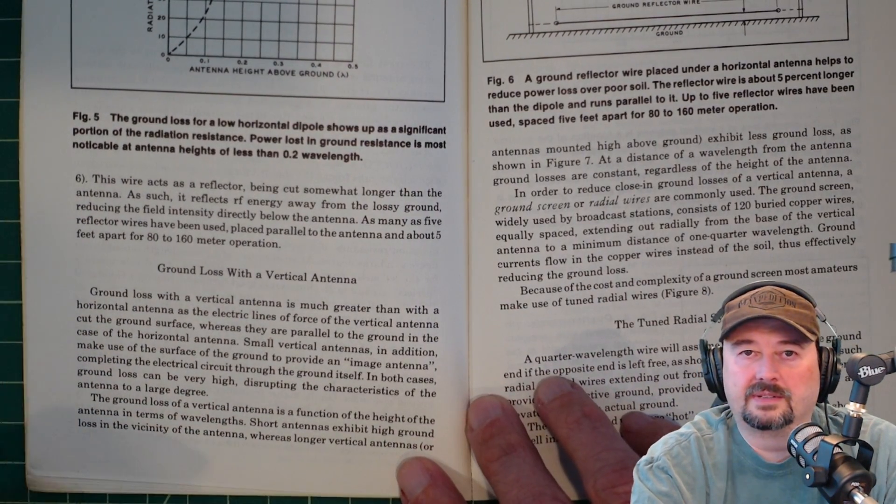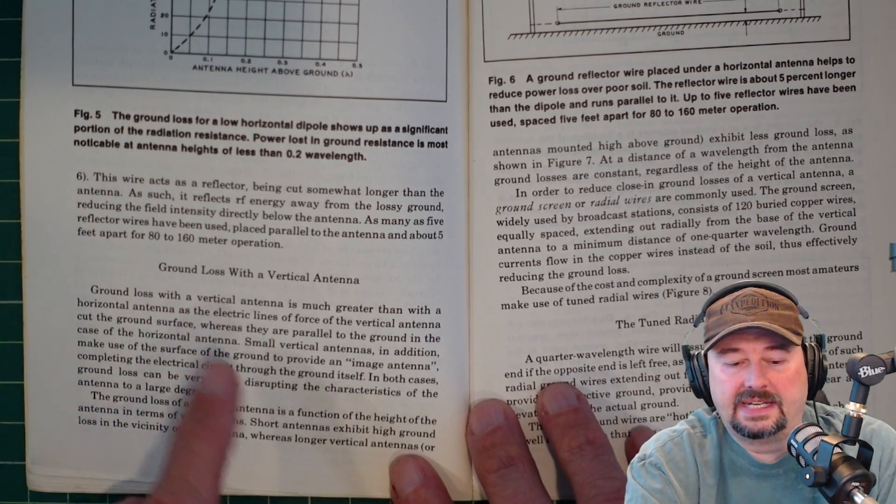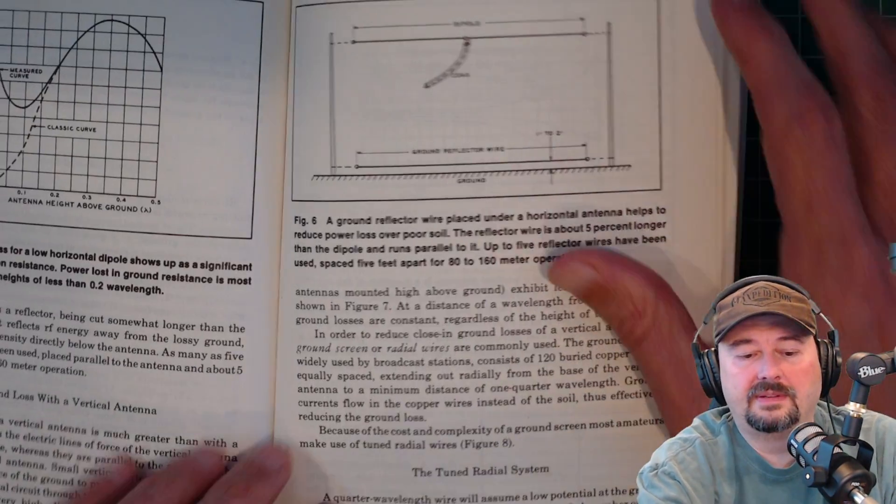And then he talks about ground loss with vertical antennas. I know a lot of folks like to use DX commanders and Wolf River coil-type antennas. Vertical antennas like that, and he talks a lot about the ground-planed and tuned radial systems or counterpoises. And it's pretty informational.